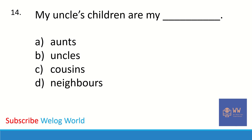Next question: my uncle's children are my dash. Options are aunts, uncles, cousins, or neighbors. The correct answer is cousins — my uncle's children are my cousins.